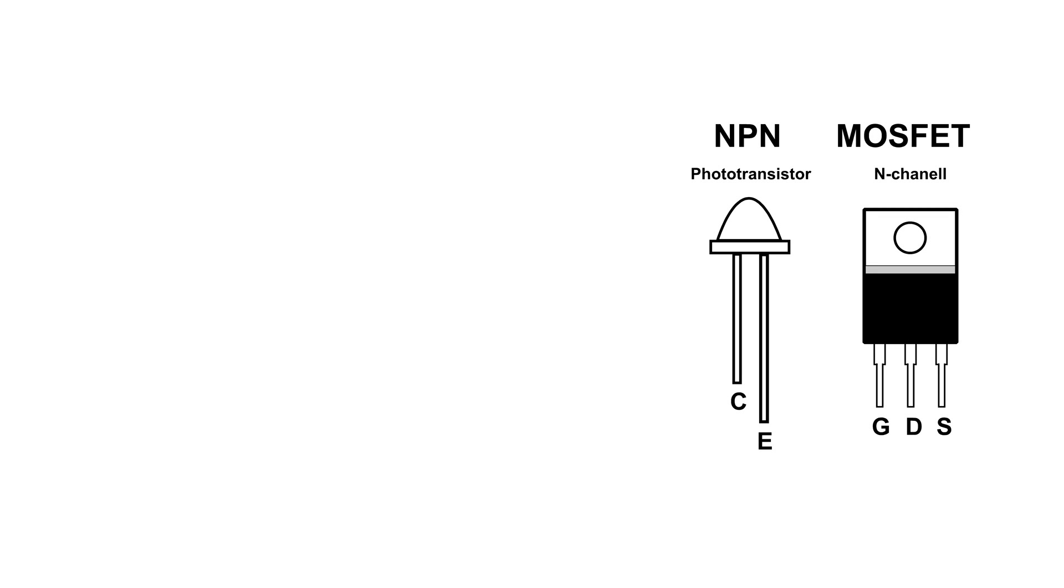I'm going to make a circuit using this NPN phototransistor. Notice that it only has two leads - that's because the base is sensitive to light, it's already built in. The next component I'm going to use is this MOSFET N-channel. I've done a number of videos on MOSFET N-channels, so I'm going to concentrate on the NPN phototransistor.